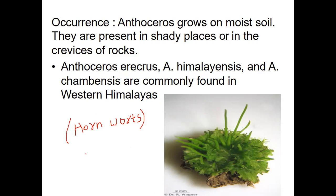Marchantia is commonly called liverworts because the thallus lobes appear just like liver lobes. Whereas here, in Anthoceros, due to the projecting sporophyte, they appear just like the horns of animals. So these projecting sporophytes appear like horns, and hence Anthoceros is commonly called Hornworts.